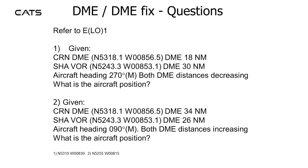DME-DME fix questions. Referring to the chart: CRN DME 18 nautical miles, Shannon VOR DME 30 nautical miles — what is the aircraft position? Aircraft heading is 270 magnetic with both DME distances decreasing. Given CRN DME 34 nautical miles and Shannon VOR DME 26 nautical miles, aircraft heading 090 magnetic, both DME distances increasing — what is the aircraft position?